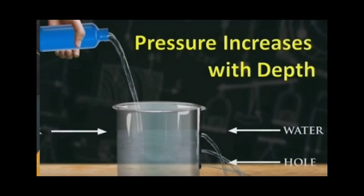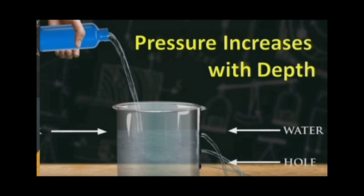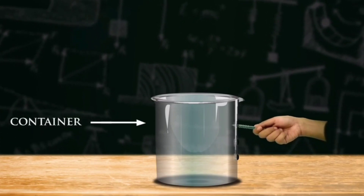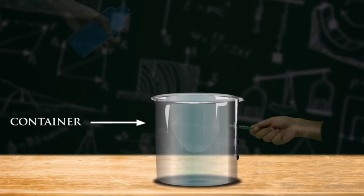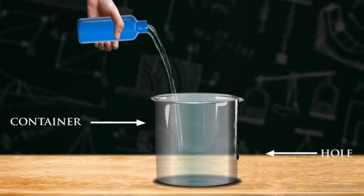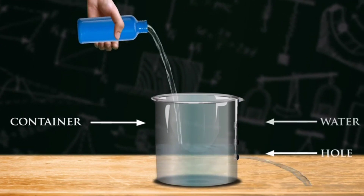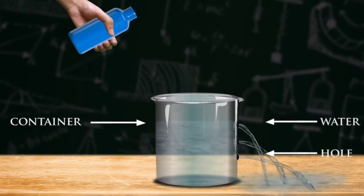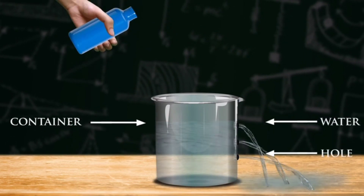Conclusion: the experiment concludes that water or any liquid exerts pressure on the side of the container, and this pressure increases with increase in depth. Pressure and depth are directly proportional.